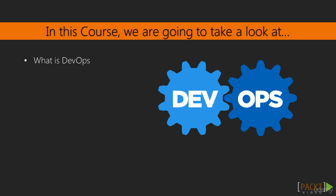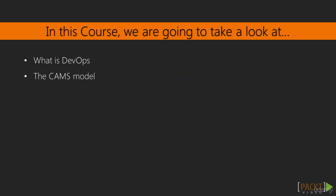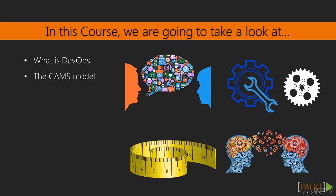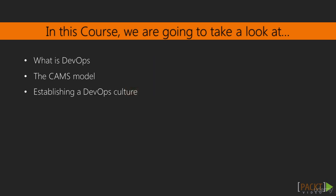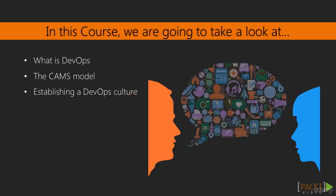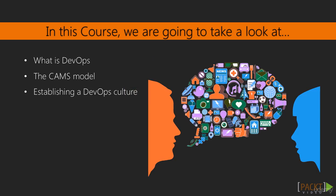Why do I even care? What's so important about it? We're going to look at the CAMS model — a way of looking at DevOps and all the different components that make up DevOps thinking. We're going to talk about establishing a DevOps culture and things you can bring to your organization to adopt a more DevOps culture.